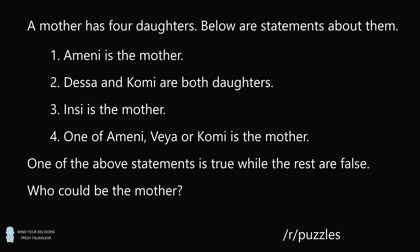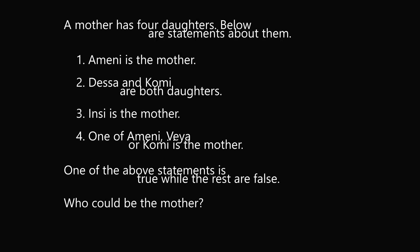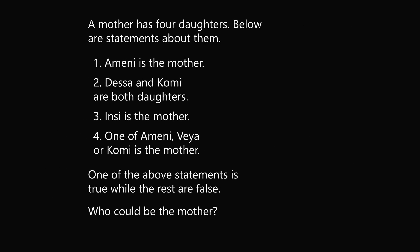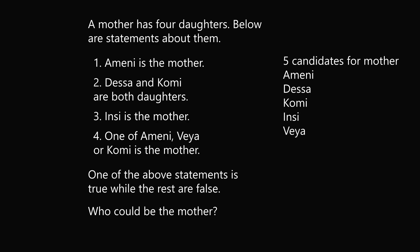At first, this seems like an impossible logic puzzle. We know that one of the statements is true, but we don't know which one. And if something like statement 4 is true, we only know that A-meni, Veya, or Komi could be the mother. How can we figure out which one is exactly the mother? Let's work through the logical possibilities. Here's one way to solve the problem: we know there's a mother and four daughters, so there are five candidates for the mother.